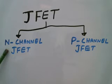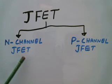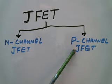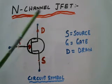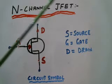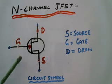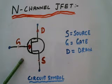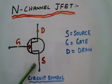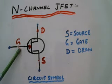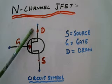First we'll discuss about N-Channel JFET. This is the circuit symbol of N-Channel JFET. It consists of three terminals: this is a source terminal, this is a gate terminal, and this is a drain terminal.